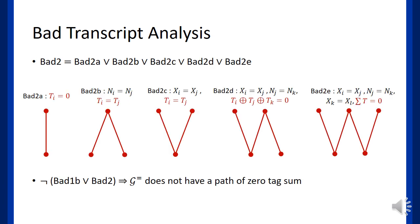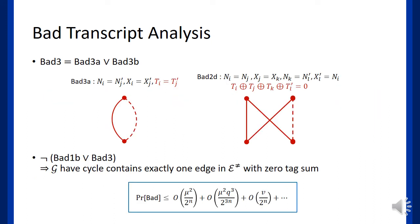Bad2 holds if at least one of Bad2a to Bad2e holds. These sub-events represent different shapes of paths with zero tag sum, and without having Bad2, you can avoid paths of zero tag sum in G_eq.